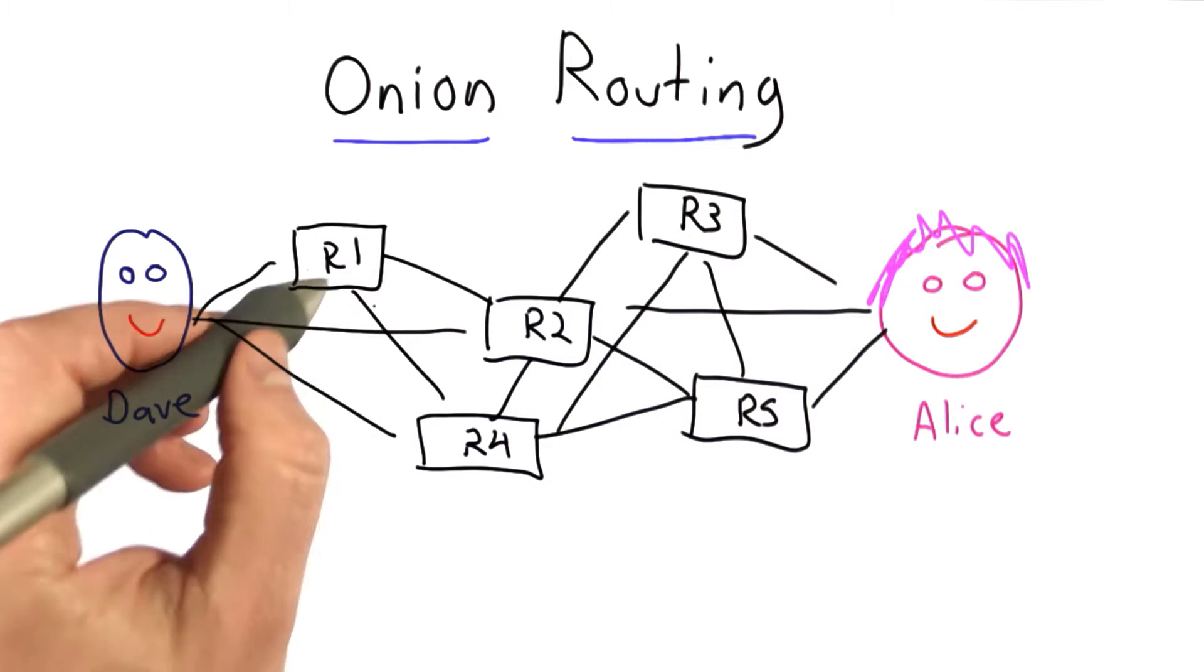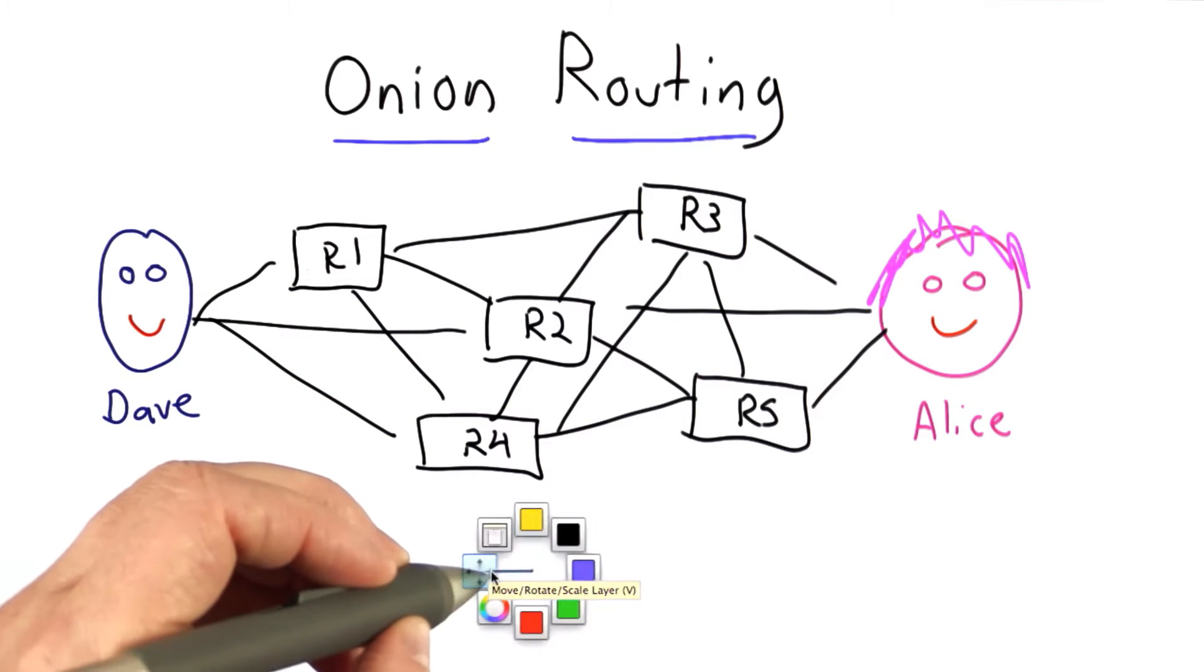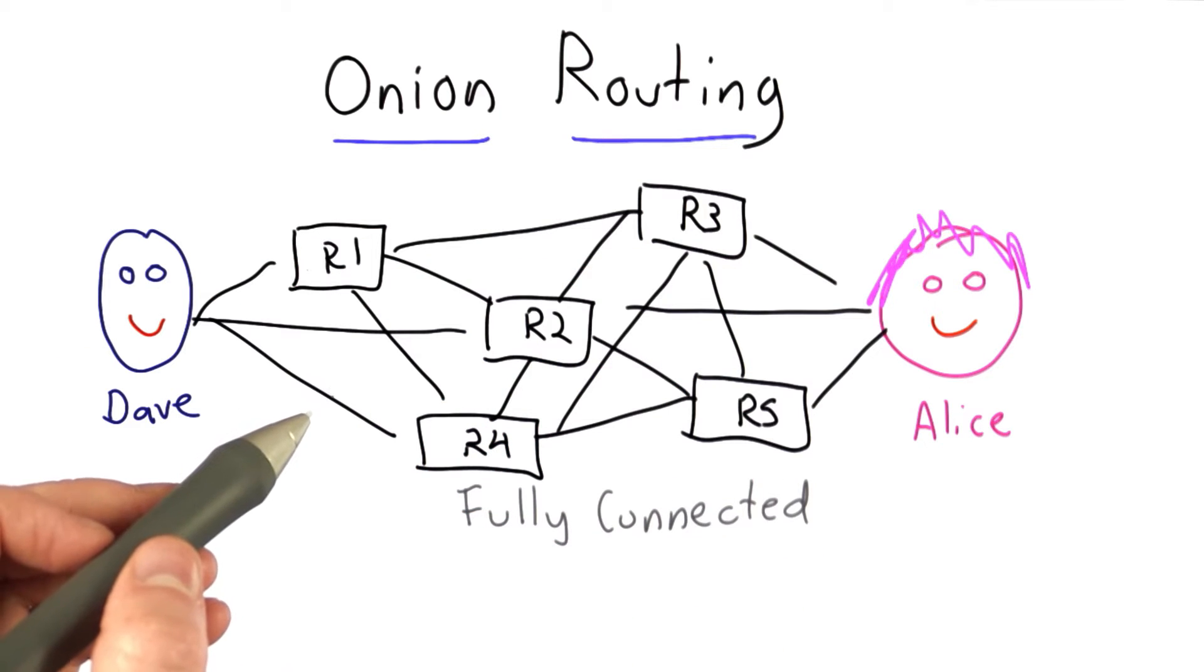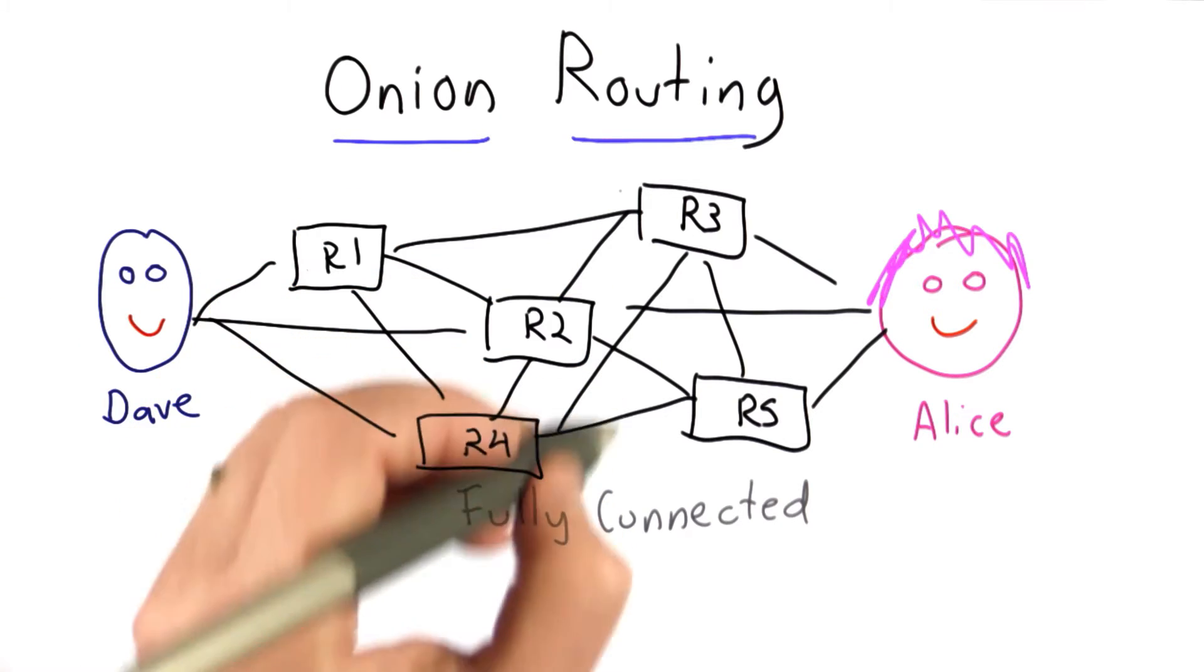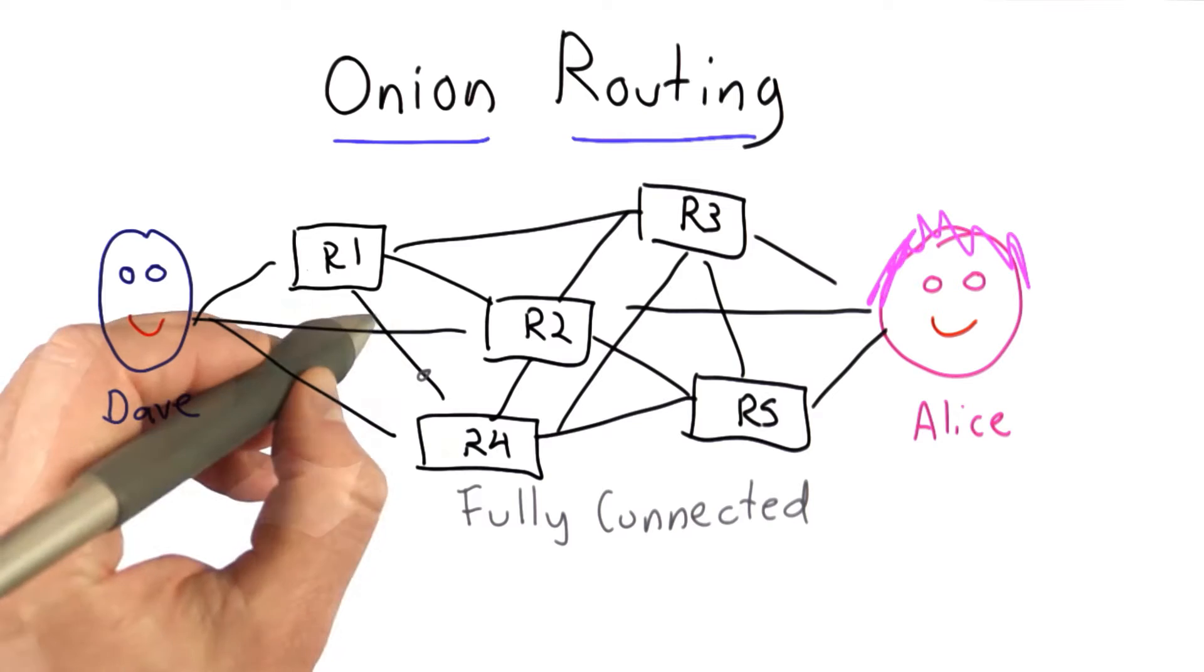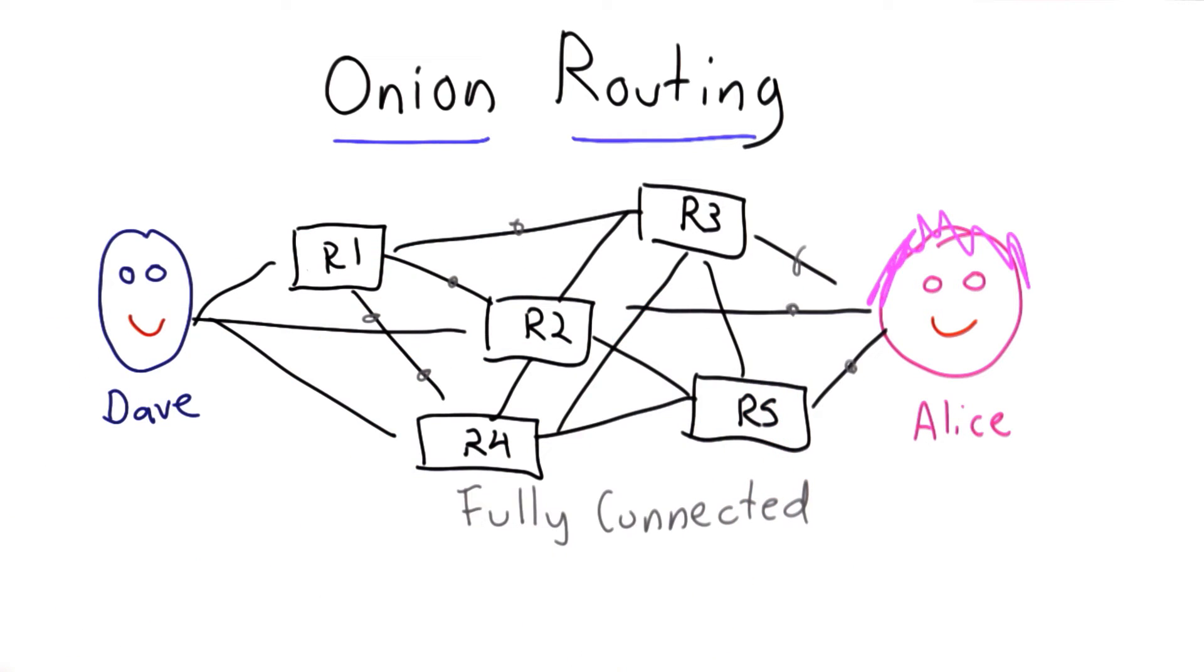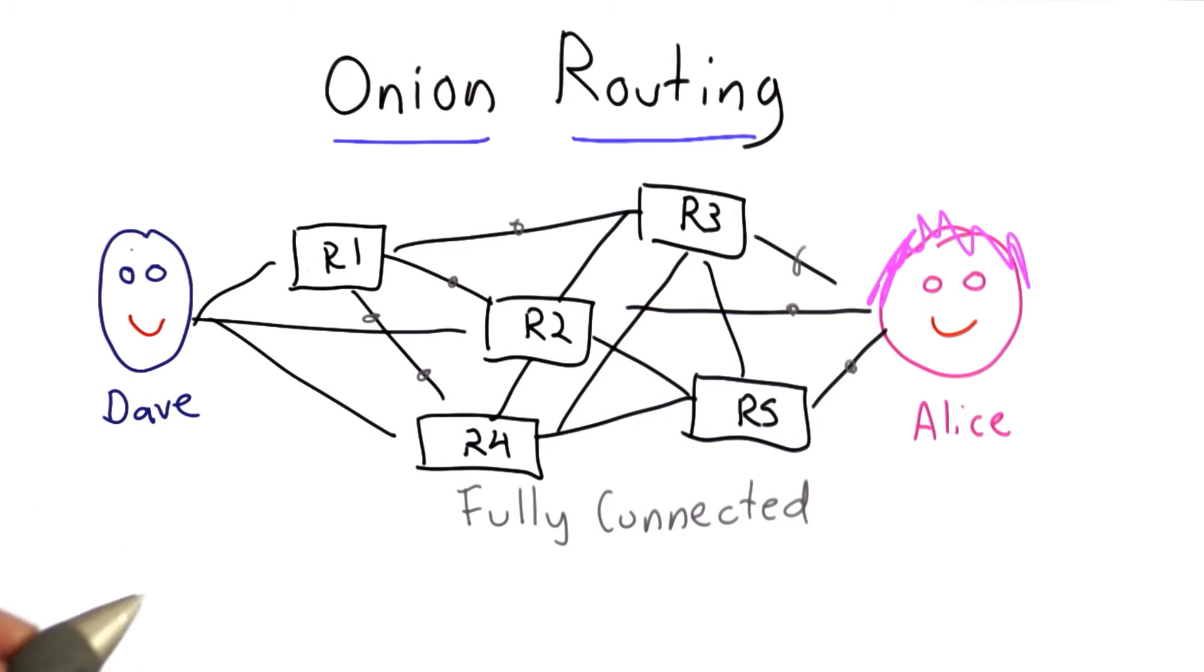So we're assuming we have a fully connected network here, and I haven't drawn all the connections because that would get kind of messy. We don't need to have a physically fully connected network. There could be other nodes in between these. We're assuming we have secure channels between each of the routers, and we could set up those channels using TLS. So we have these secure channels between all of the routers and between all the participants, including myself and Alice.